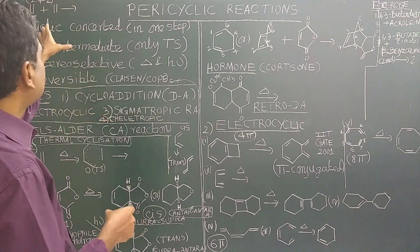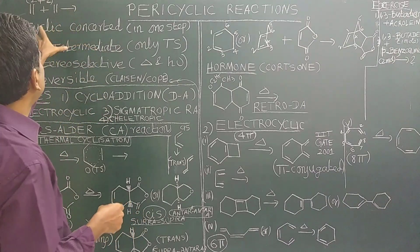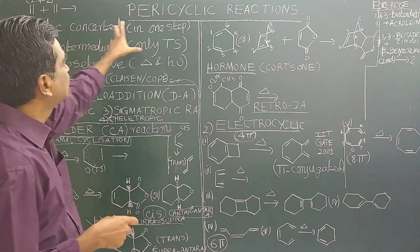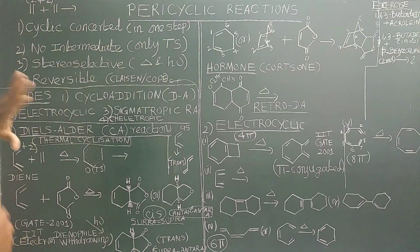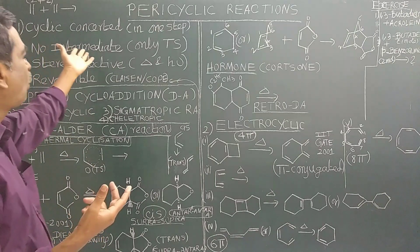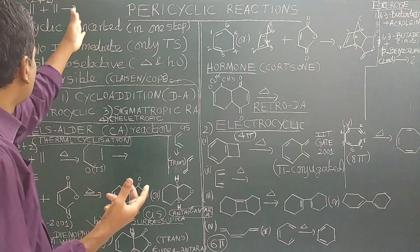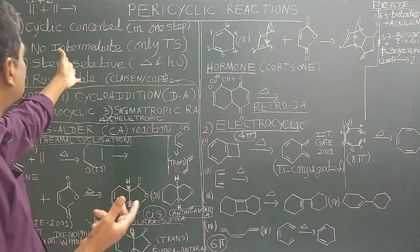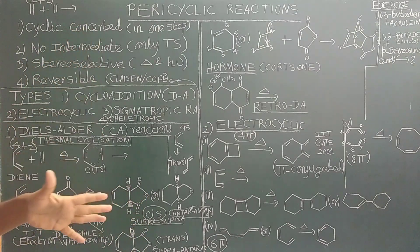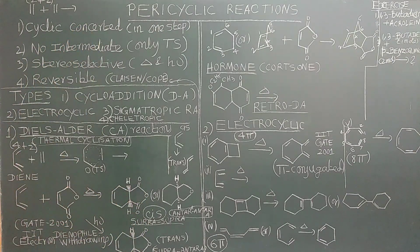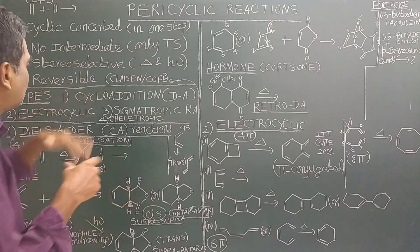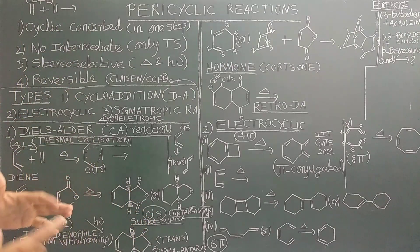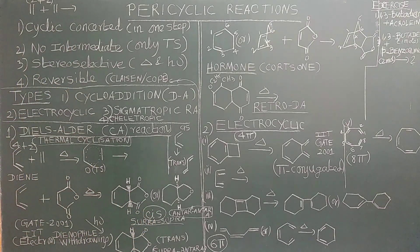We have seen the characteristics of pericyclic reactions — there will be no intermediate form, and there are four characteristics in total. What are the types? Similarly, there are four types of pericyclic reactions.